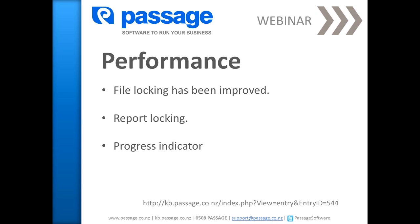Finally, performance. There have been the following improvements to performance in Sage 50 Accounts 2012. File locking has been improved so that files are locked for a shorter period of time. Report locking: the software now takes a copy of the data and uses this for running the report, meaning that the live data is no longer locked and the user can continue to process while the report is running. A progress bar has been introduced so you can see that the software is working. In earlier versions there was no progress bar and users often thought the software had crashed — in some cases forcing it to close, which could damage their data.